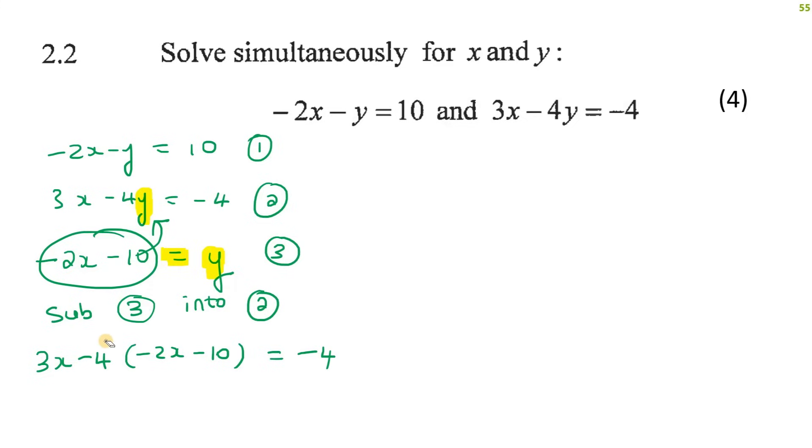Now I just need to multiply this minus 4 inside this bracket. So I end up with 3x plus 8x because a minus and a minus makes a plus. And then it's going to become plus 40 because a minus and a minus makes a positive. And that's going to be equal to negative 4.